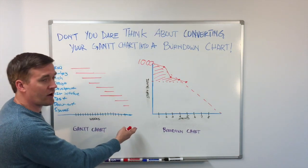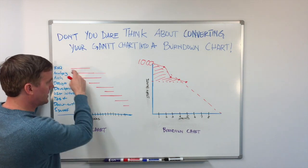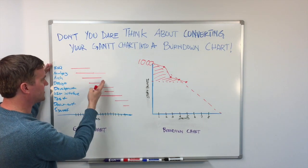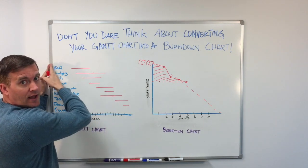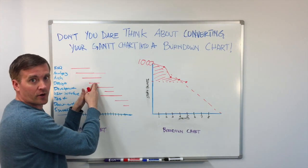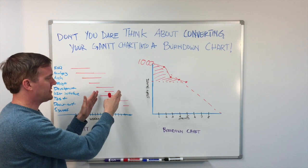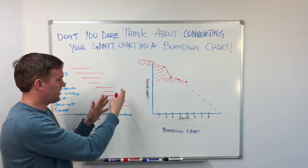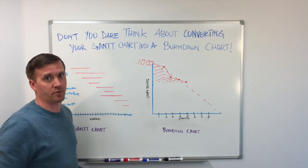In a traditional waterfall project being managed by a Gantt chart, when you get to the same point, all you have is a whole bunch of unfinished work and a lot of documentation. You don't really start getting into finishing the work until you're in the development, the testing, and the deployment phases of a traditional project.